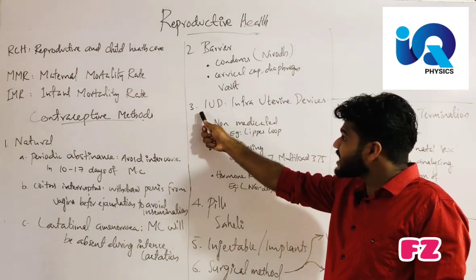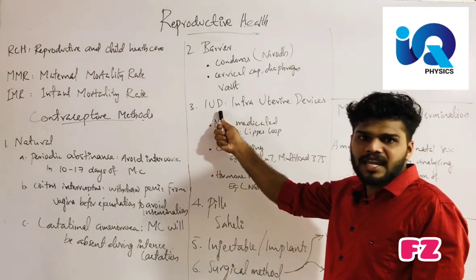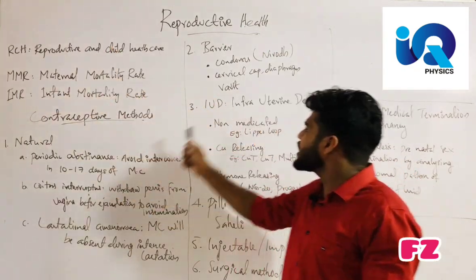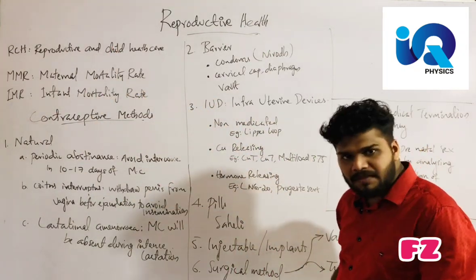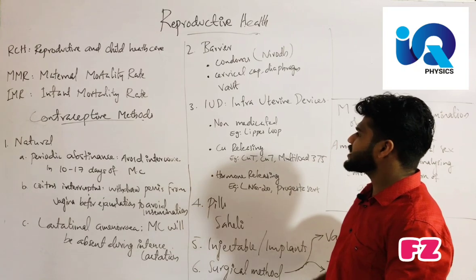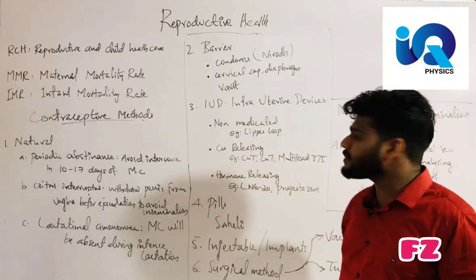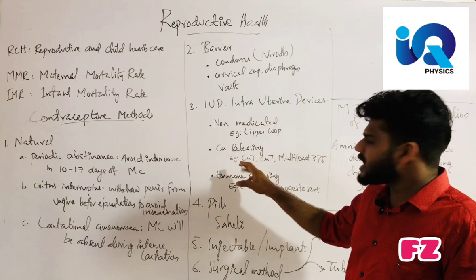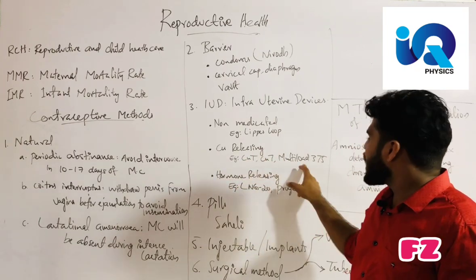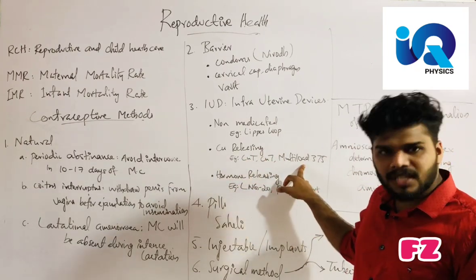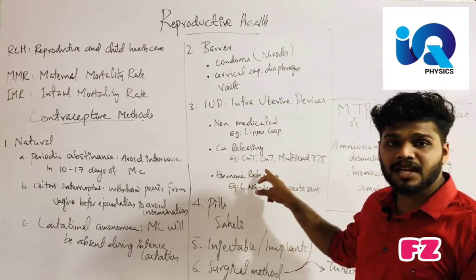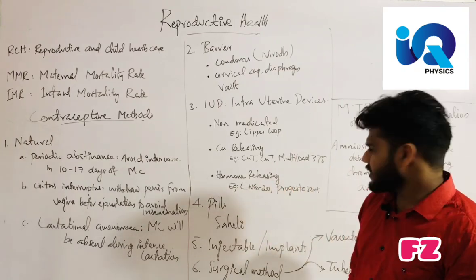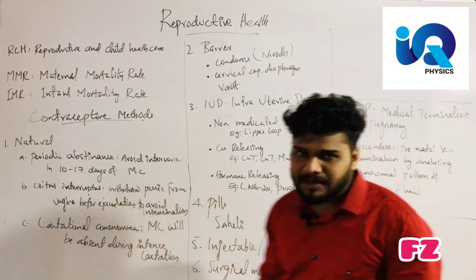Next is the IUD — Intra Uterine Device. Types include non-medicated IUDs such as Lippes Loop, copper-releasing IUDs such as Copper-T and Copper-7 and Multiload 375, and hormone-releasing IUDs such as LNG-20 and Progestasert.